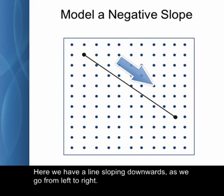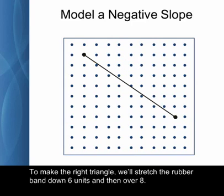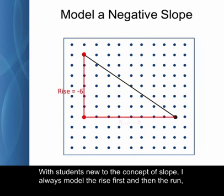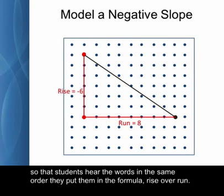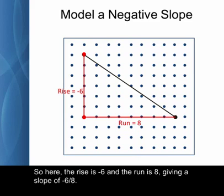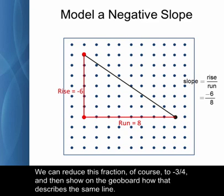Here we have a line sloping downwards as we go from left to right. To make the right triangle, we'll stretch the rubber band down six units and then over eight. With students new to the concept of slope, I always model the rise first and then the run, so that students hear the words in the same order that they put them in the formula, rise over run. You can be more flexible later. So here the rise is negative six and the run is eight, giving a slope of negative six eighths. We can reduce this fraction, of course, to negative three fourths and then show on the geoboard how this describes the same line.